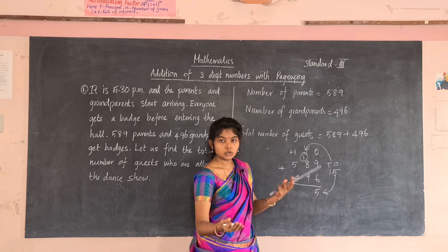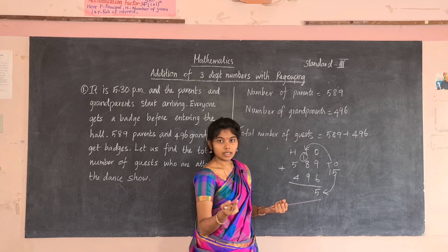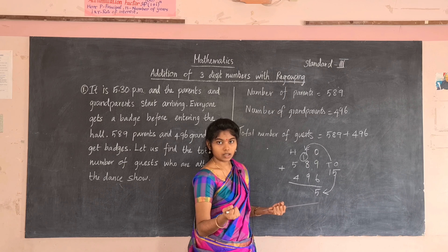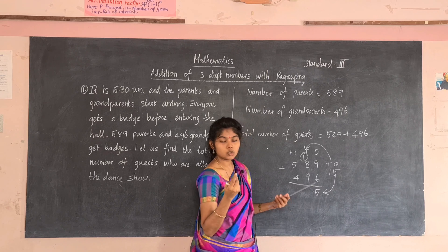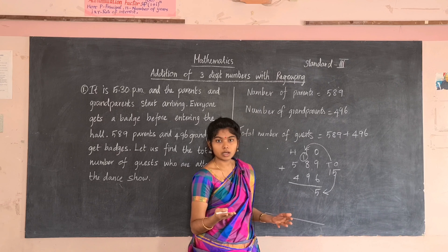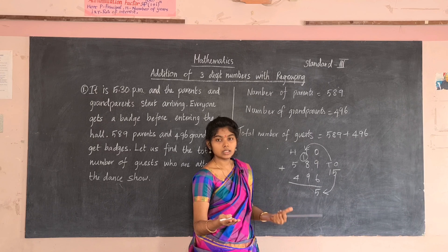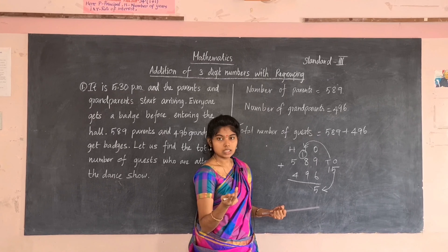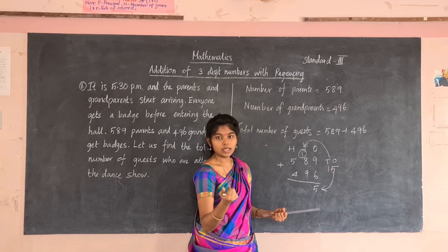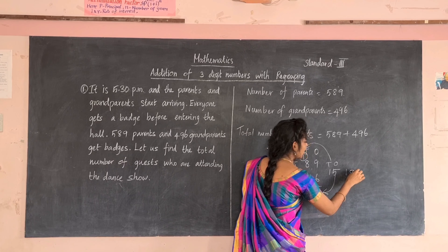Now add the tens place. Keep one in your mind, take eight in the fingers: say after one — two, three, four, five, six, seven, eight, nine. Now nine is in your mind; take the next number nine in your fingers. Say after nine — ten, eleven, twelve, thirteen, fourteen, fifteen, sixteen, seventeen, eighteen. It is a two-digit number, so write eighteen outside.